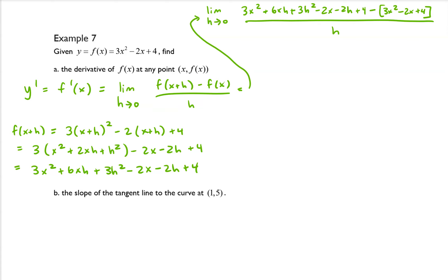Let's see if we can't cancel some stuff out. So 3x squared minus that 3x squared. The minus 2x, if we distribute the negative sign in, will cancel out with that negative 2x and the 4 and the minus 4.